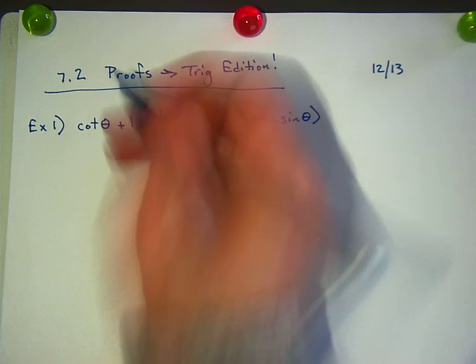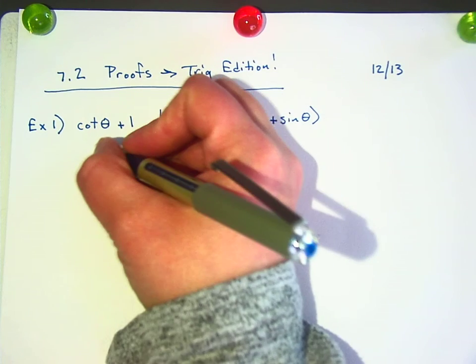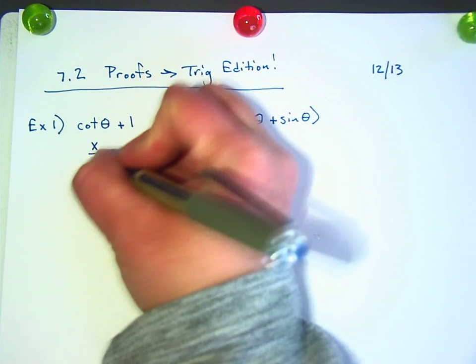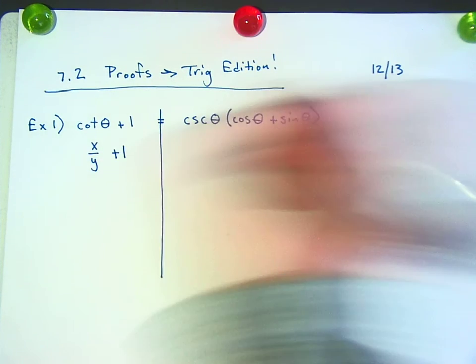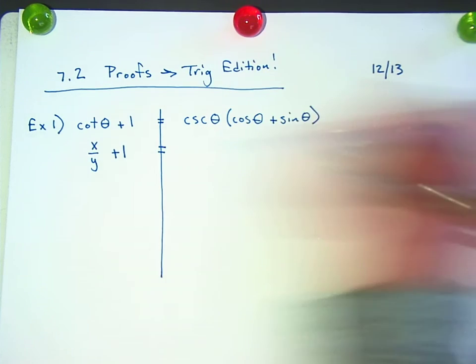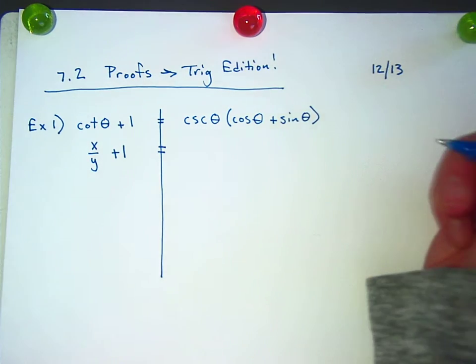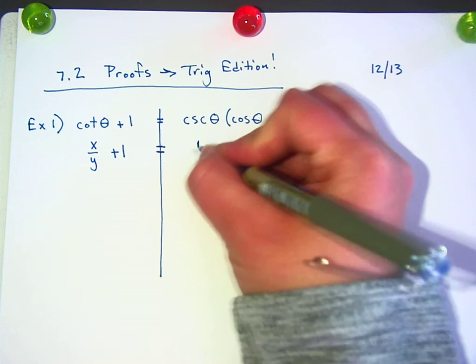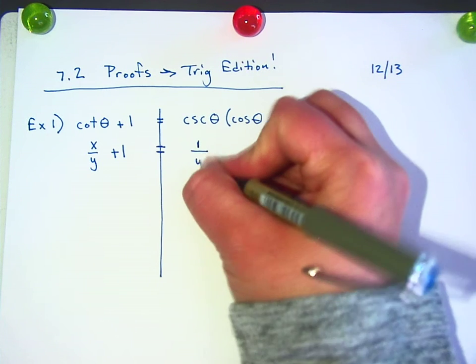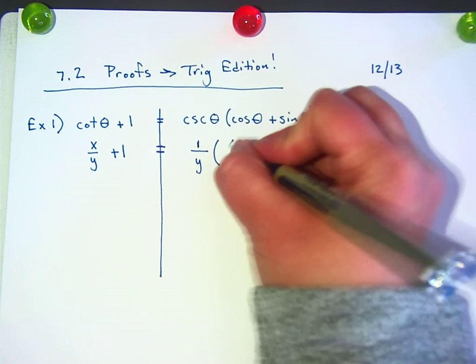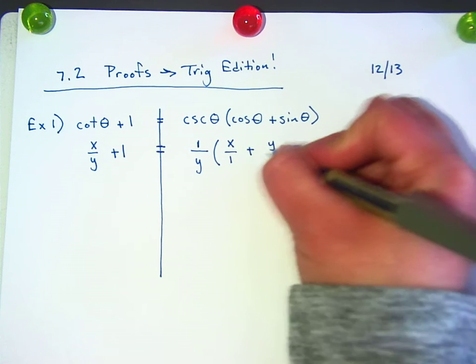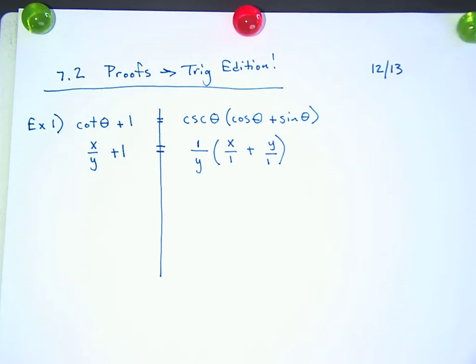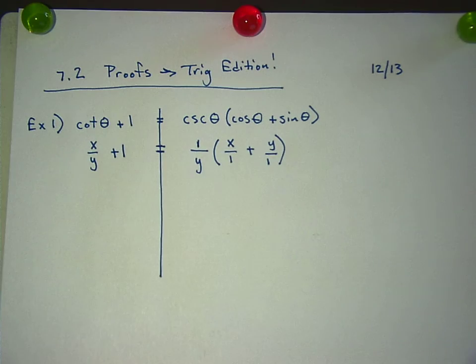Okay. So, cotangent is what? x over y plus 1. Yep. Remember, you can't go back and forth between the sides. Cosecant is 1 over y. Cosine is x over 1 plus sine is y over 1. Why do you think that I made it x over 1 and y over 1 instead of just x plus y?